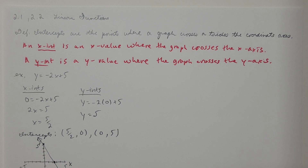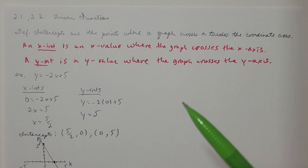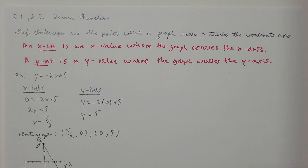A definition: intercepts are the points where a graph crosses or touches the coordinate axes. So we might have a curve that comes down and crosses through the x-axis, or comes down and touches the x-axis and pulls away — that's still an intercept. An x-intercept is an x value where the graph crosses the x-axis, and a y-intercept is a y value where the graph crosses the y-axis.